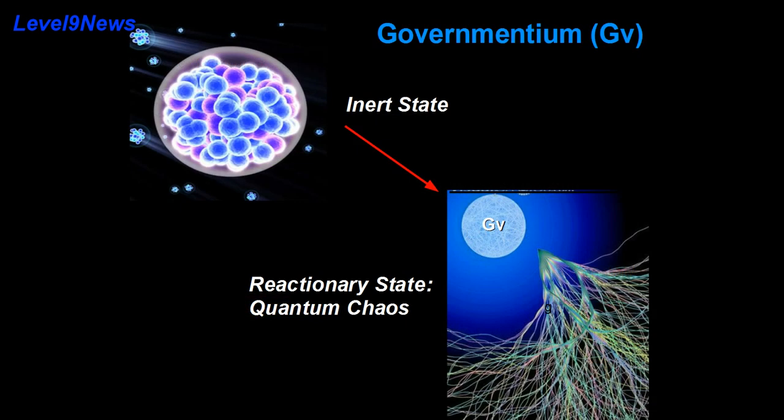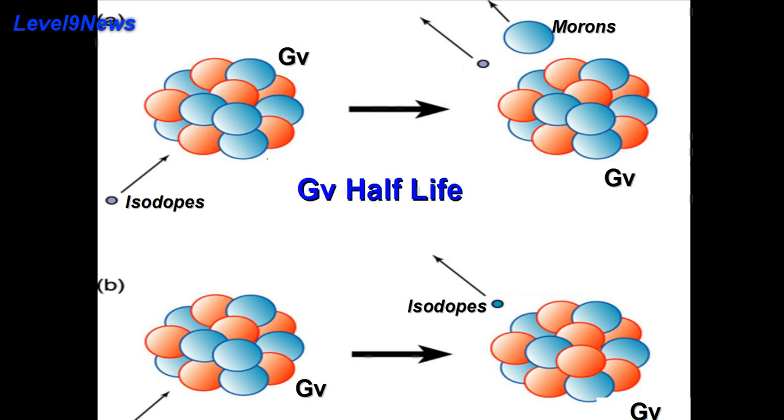Governmentium has a normal half-life of two to eight years. It does not decay but instead undergoes a reorganization in which a portion of the assistant neutrons and deputy neutrons exchange places.